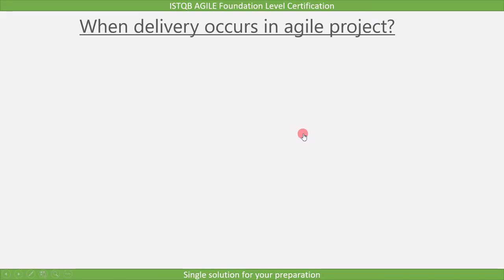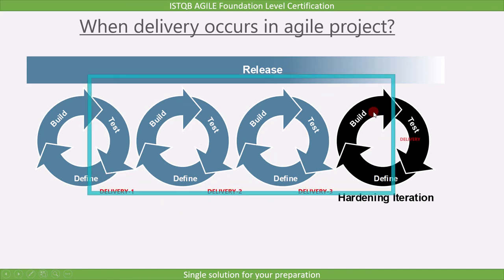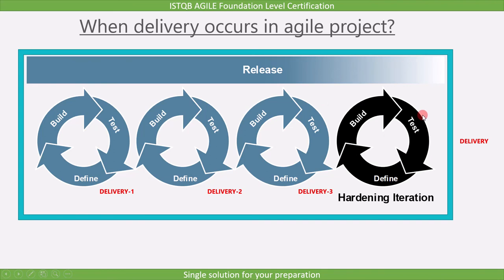Now we shall consider when delivery occurs in agile projects. We can follow two processes: deliver the product after each iteration, or deliver after each release. Each release consists of two or three iterations.